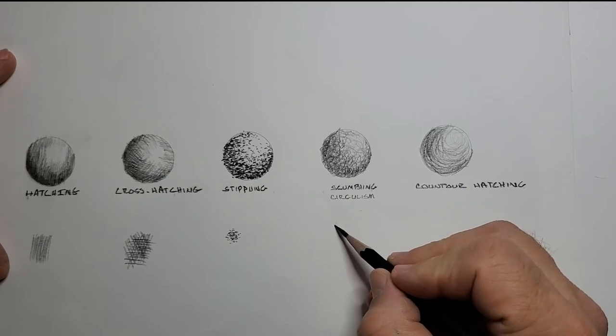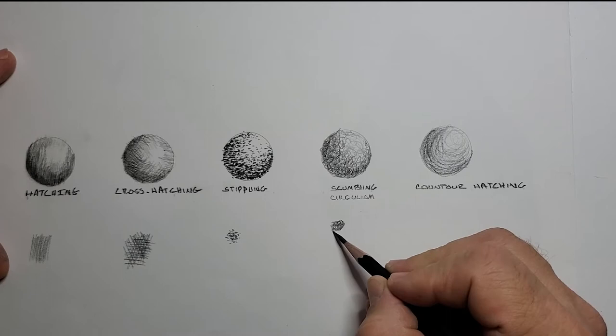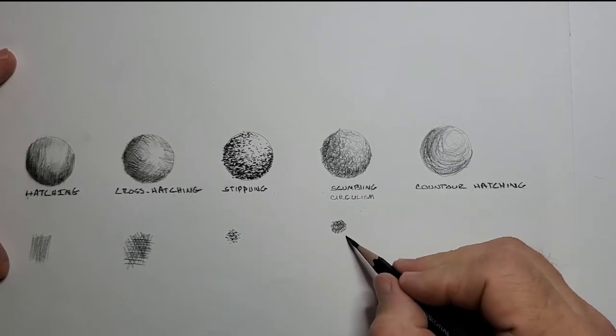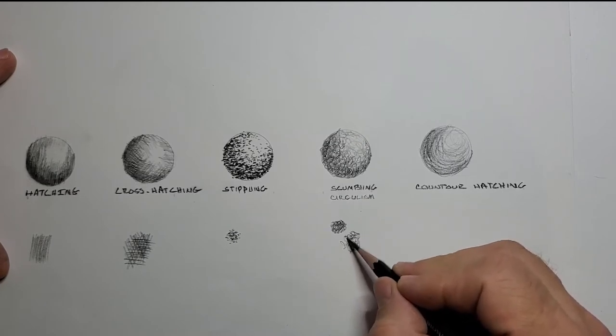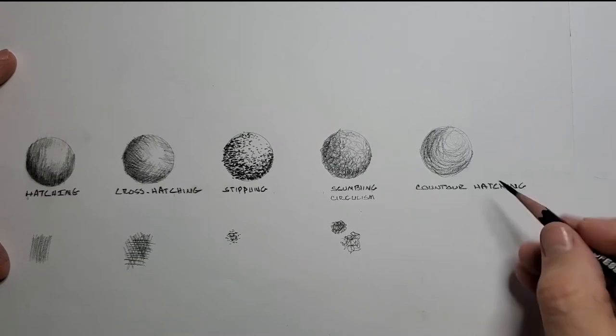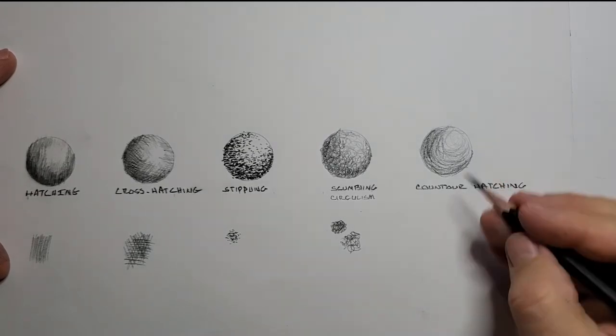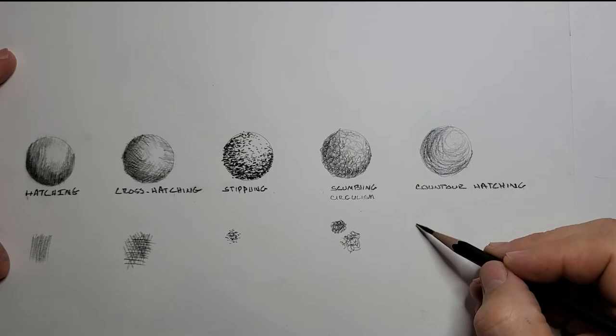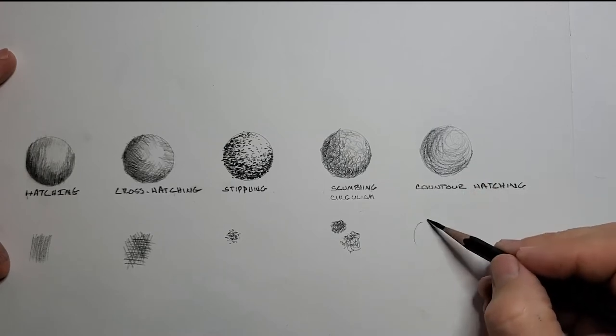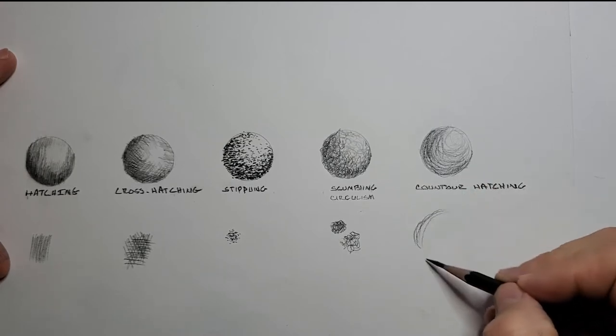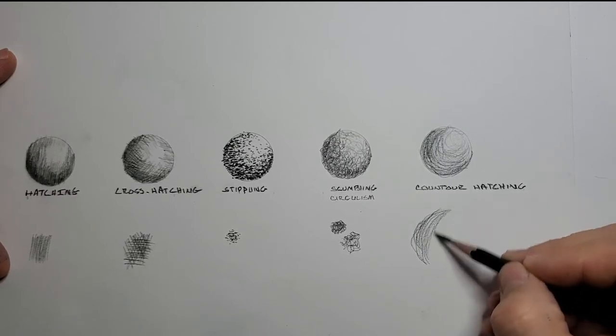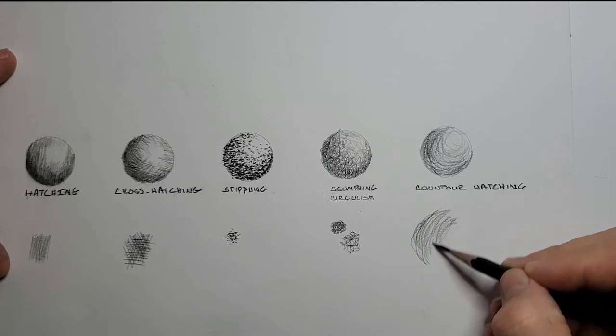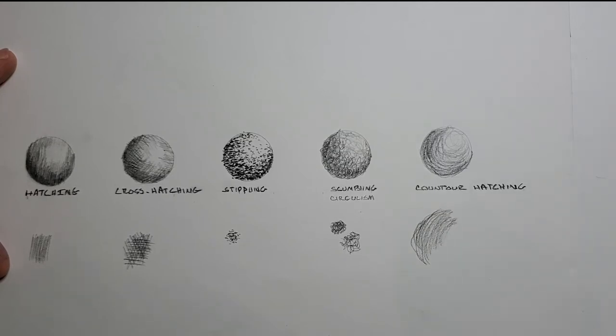We have scumbling and circularism. Circularism is basically making little circles to shade, which is great if you're doing skin textures for blending later on. And scumbling is more like random scribbling. And then there's contour shading, which is similar to hatching but you're following a shape. So if it's a circle here, you're shading following the shape of whatever it is that you're going to be shading in. All right, here we go. Different types of shading.